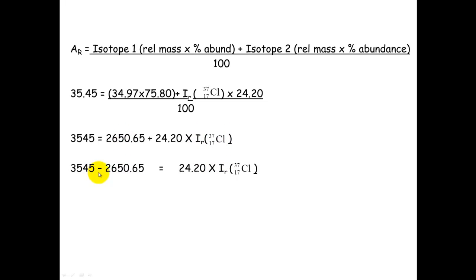So if we subtract 2650 from both sides, and then divide it by 24.2, we can work out the relative isotopic mass there of Chlorine-37, which is 35.96.